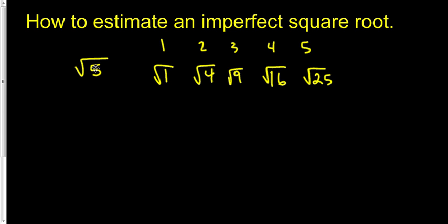Now we can take the imperfect square root and try to place it in between. It's not going to fit between 1 and 4. It's going to fit between 4 and 9. So the square root of 5 is going to be somewhere between 2 and 3. You can take it a little bit further if you need to, but a lot of times this will get you close enough.